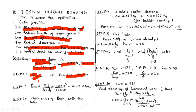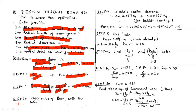Step 2: Calculate the unit bearing pressure. The formula uses the radial load F_radial divided by L_b times D_j. Substituting: F_radial = 2.8 × 10³ N, L_b = 60 mm, D_j = 60 mm. We calculate the value of unit bearing pressure from these values.